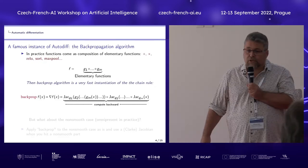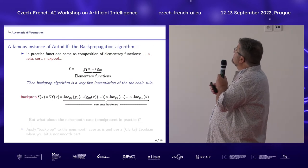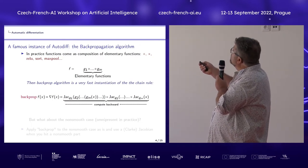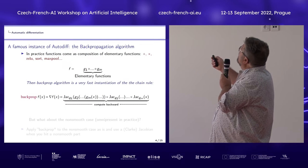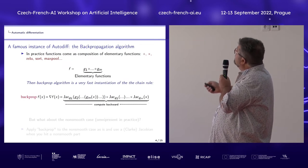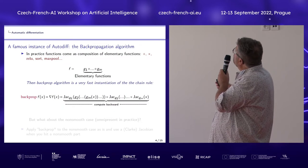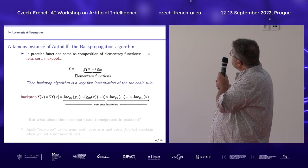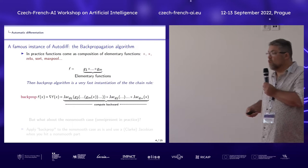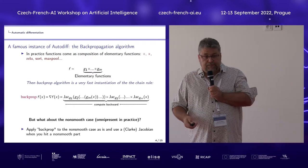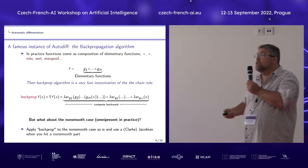To analyze this issue, we are going to focus on a special method called the backpropagation algorithm. You have a function which is a composition of elementary functions — basically addition, multiplication, and basic functions. The backpropagation algorithm is a very fast instantiation of the chain rule. We apply the chain rule on this and compute it backward. The problem we meet is that we have non-smoothness, so we have to deal with this.